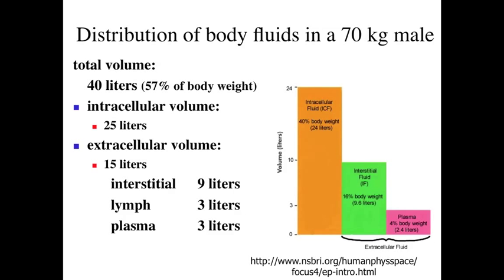Lymph, which we'll discuss in the last lecture of this circulatory system series, is excess tissue fluid collected by a second circulatory system - the lymphatic circulatory system. It's involved with returning fluid and the materials within it back through the body via a series of filters, including lymph nodes, and returning those fluids back to the cardiovascular system for recycling. Plasma is the fluid within the cardiovascular system itself, and that will be the primary focus of this lecture series.